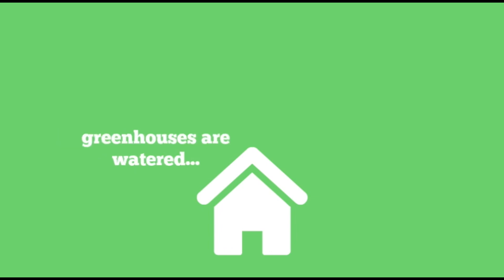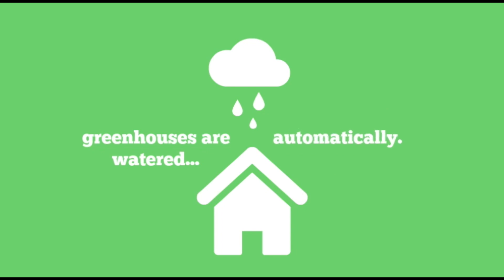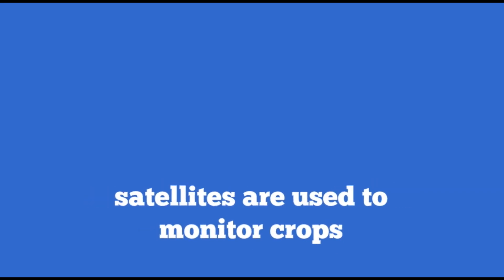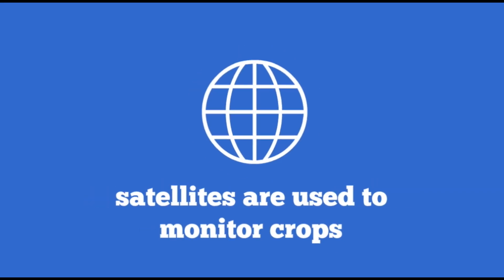We have developed technology in such a way that we can control a greenhouse's temperature, humidity, lighting, and even watering automatically. We also now know how to use satellites to monitor crops.